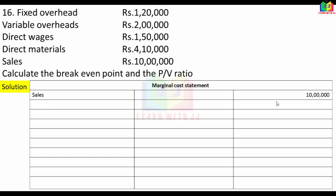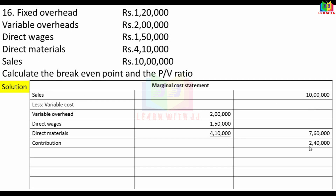Sales is 10,00,000. Minus variable cost: variable overhead plus direct wages plus direct material = 7,60,000. Contribution is 2,40,000. PV ratio is contribution divided by sales multiplied by 100.